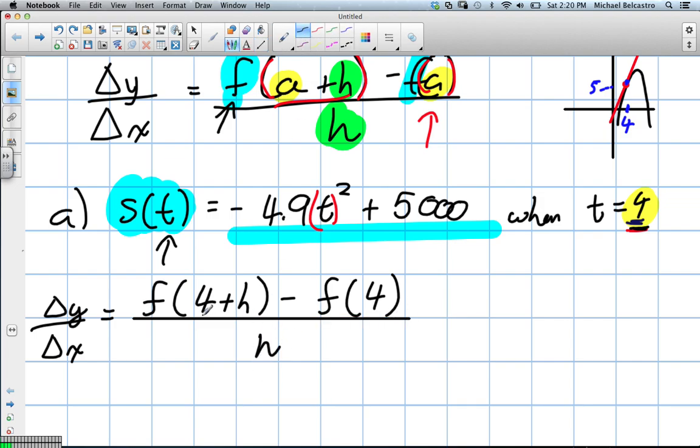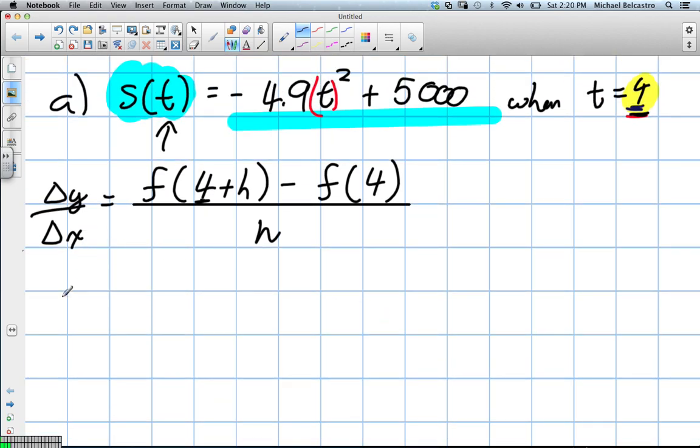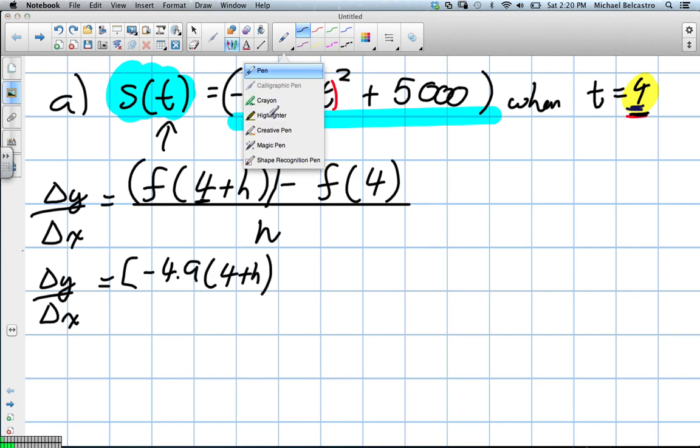We know a is going to be 4 in this question, right? So 4 plus h minus the entire function when 4 is the variable. That's what the f stands for. All divided by h. In other words, we're looking at when we're at 4, what's the rate of change when h is something really small? So now we're going to actually plug this function into it.